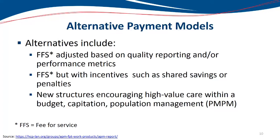Lastly, there are new structures that are alternatives to fee-for-service that encourage high-value care either within a budget, by capitation, or through population management programs. For example, paying per member per month — a capitated type of payment where you're managing the population to try to reach some quality metrics or performance metrics. These are some of the options that can be tried under alternative payment models.